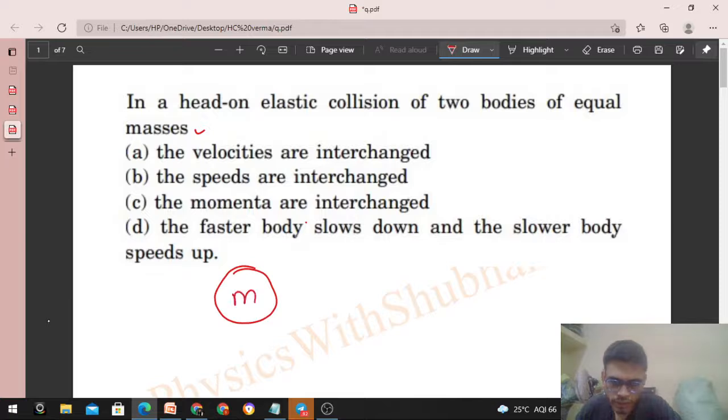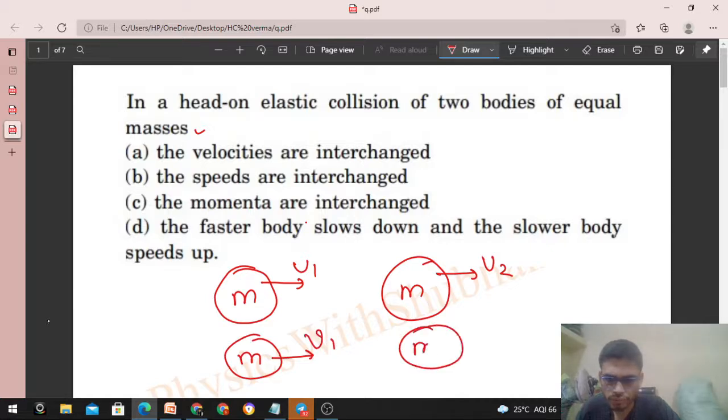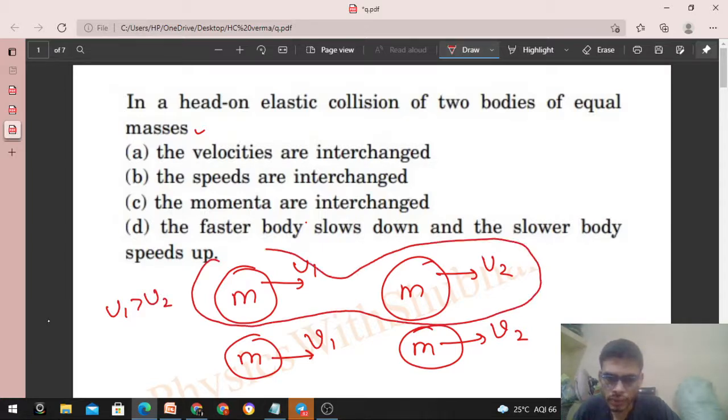Let's say both have mass M and initially they were moving with U1 and U2, and after collision they started moving with V1 and V2. Initially, U1 was greater than U2. Then only the collision between the two bodies can happen, right?